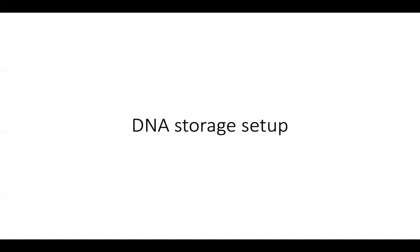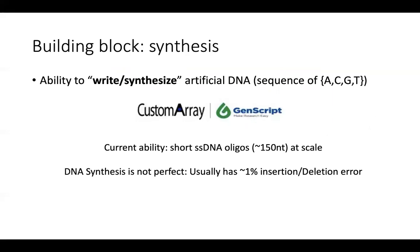For that, let's look at the general setup. For any storage medium, you need two important components: one is a way to synthesize data — basically write data into the medium — and another way to read the data back. For synthesis or writing, we have the ability to write artificial DNA into sequences of DNA bases. DNA is a sequence of bases or nucleotides where each base can take four possible values: A, C, G, or T. So it's just a string of alphabet size four. Currently we have the ability to synthesize a large number of short sequences, maybe 150 in length, and the synthesis process has around 1% error rate.